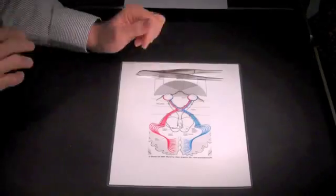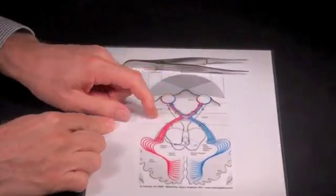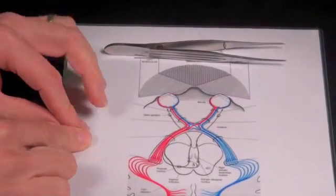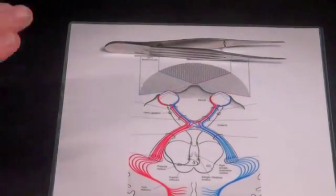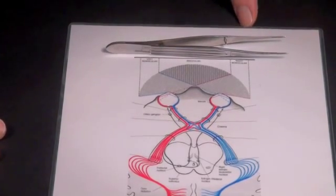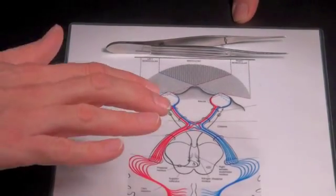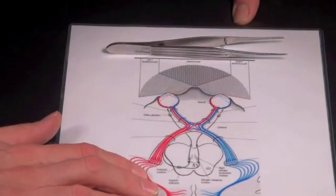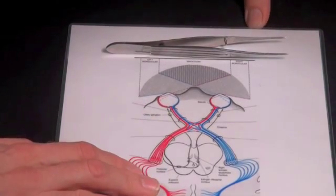One thing that often is confusing to people is the crossing, in which fibers cross at the optic chiasm. But it's really very simple, it can be taken to a very simple level, and that is everything in the right visual field, regardless of which eye it enters on, ends up in the left cortex. So everything in the right visual field ends up in the left cortex.